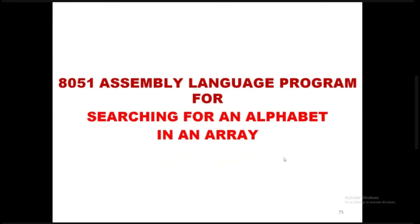We are writing an 8051 assembly language program for searching for an alphabet in an array. First, we need to fill memory locations with the ASCII equivalents of alphabets, that is 41 to 5A. We write a simple loop program so that from the 20th memory location, 26 locations are filled with 41, 42, 43, 44, 45, 46 up to 5A, which are the ASCII equivalents of capital A to capital Z.